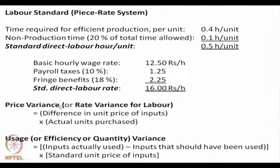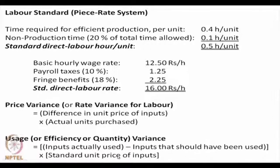Price variances — also known as rate variances for labour — are calculated as the difference in unit price of inputs multiplied by the actual units purchased. If there is a price variation between what was standardized and the actual, that difference multiplied by actual units purchased is the price variance. Usage variance is calculated with price held constant: the difference between actual quantity used and planned quantity, multiplied by the standard unit price.